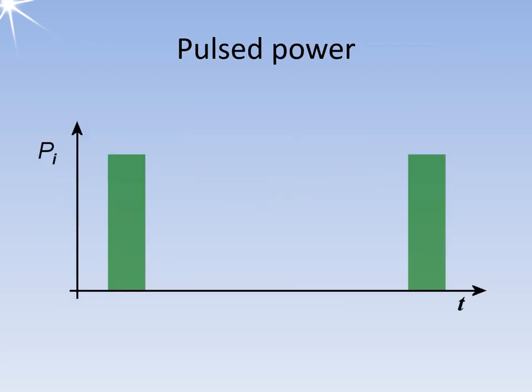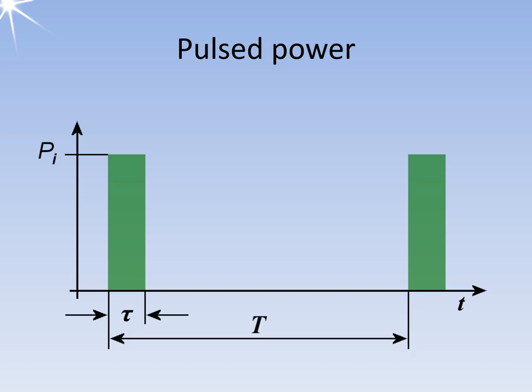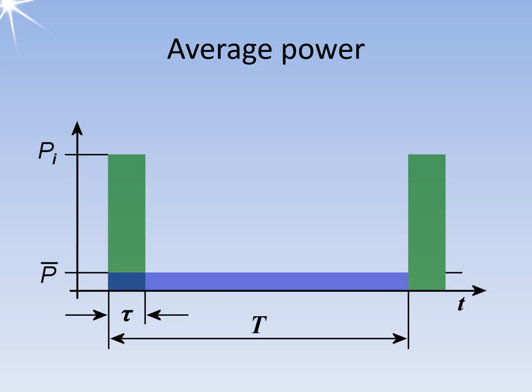In pulse radar sets, the pulse power is usually specified in the data since it's used in the radar basic equation. During the transmission pulse with the pulse width tau, pulse power is only generated for a very short time. The sequence of transmission pulses is defined by the pulse repetition period, symbolized by the capital letter T. In this graph, the average power would be the even distribution of the energy from the short transmission pulse over the entire pulse repetition period.